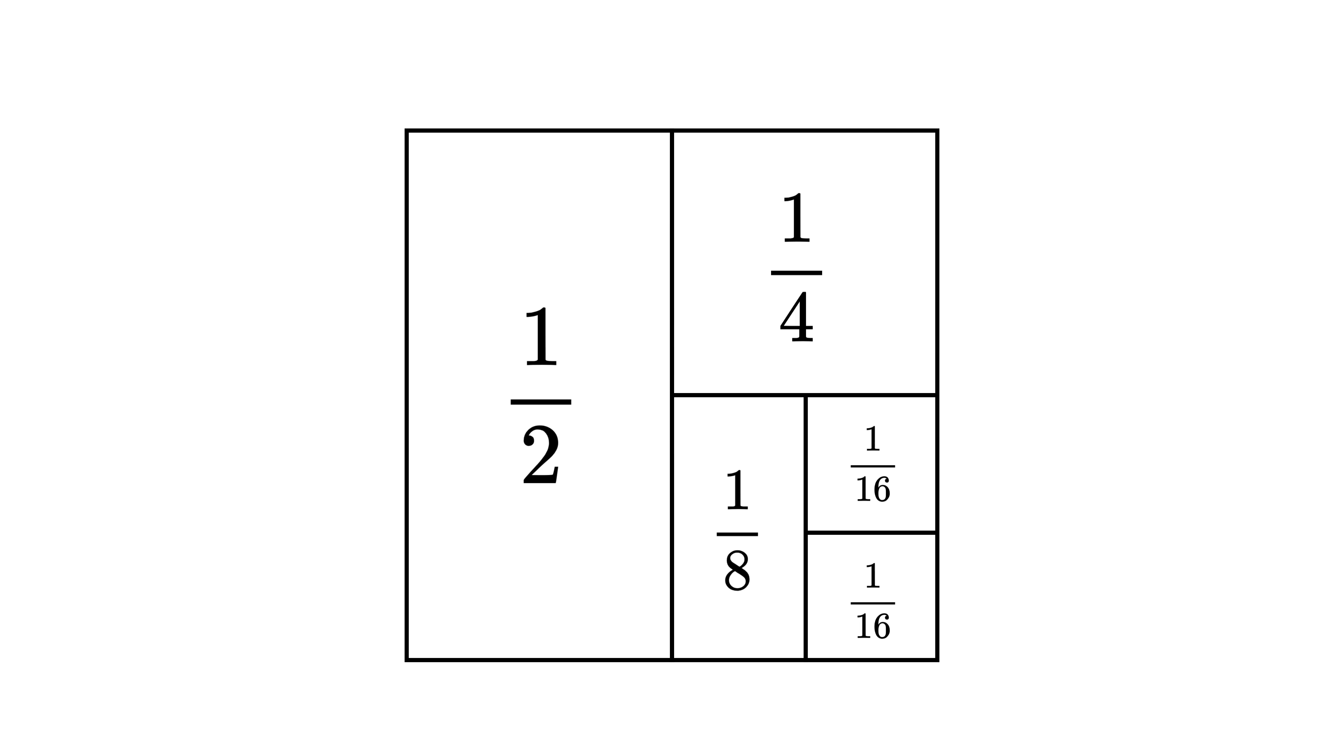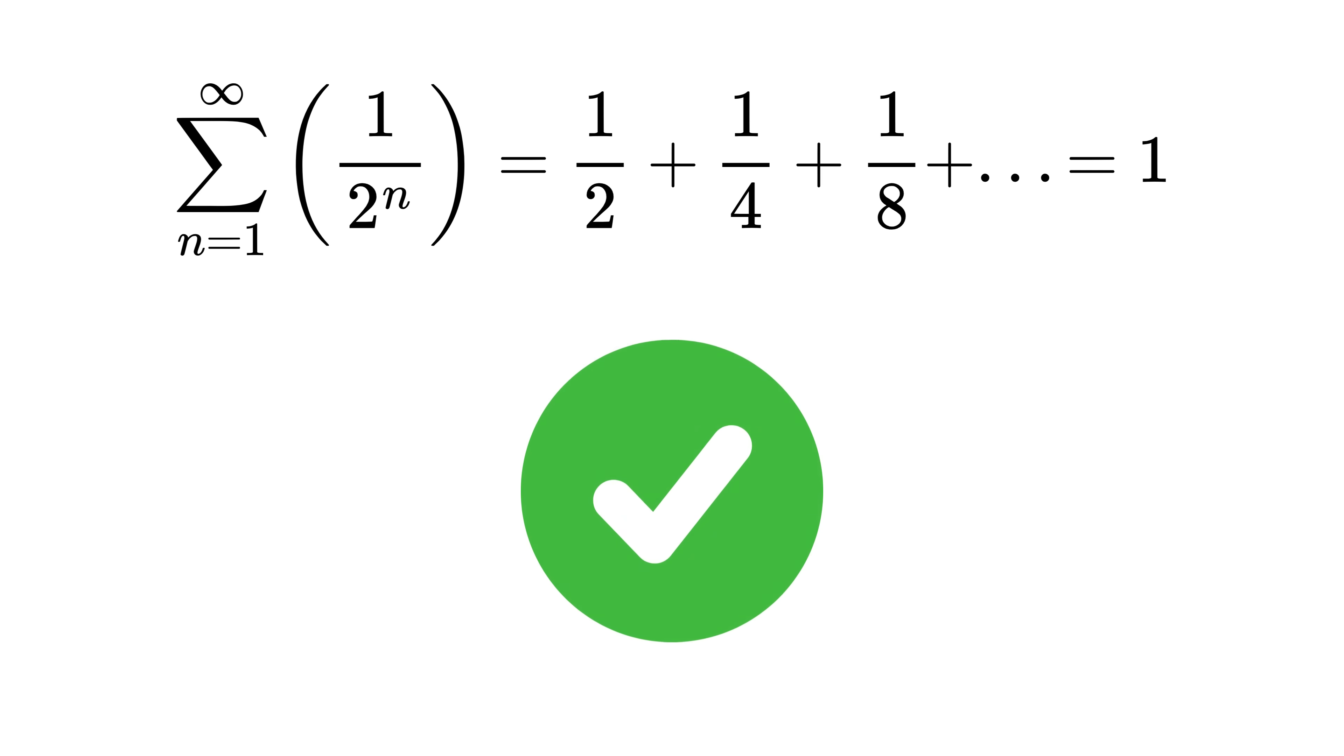Then again divide that 1/8 into half to get 1/16. Keep doing this forever, each time taking half of the remaining part. Surprisingly, if you add up all those tiny pieces—1/2 + 1/4 + 1/8 + 1/16 and so on—you'll perfectly fill the original square of area one.